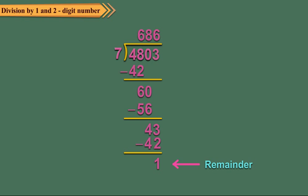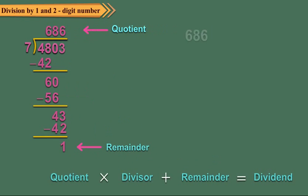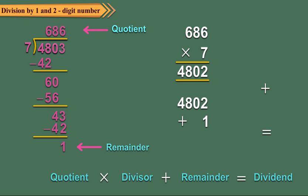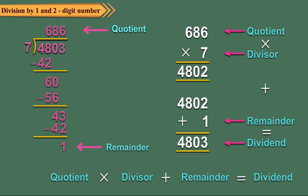So we get 686 as the quotient and 1 as the remainder. We can check the correctness of our division using the relationship: quotient multiplied by divisor plus remainder is equal to dividend. Multiplying the quotient and the divisor, then adding the remainder, we see that the sum is 4,803 which is the dividend. Hence our division is correct.